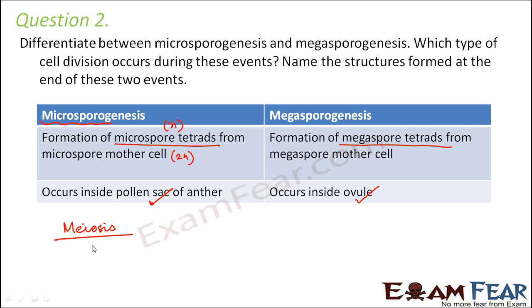Meiotic division takes place during both these events. The structures formed at the end are microspore tetrads during microsporogenesis and megaspore tetrads during megasporogenesis.